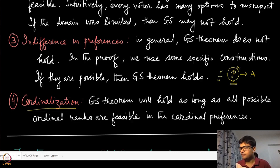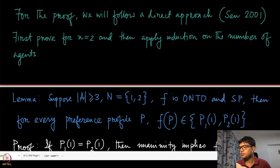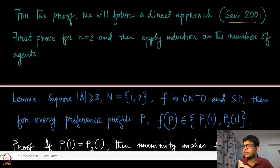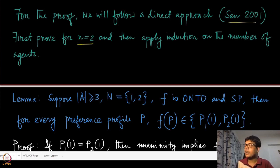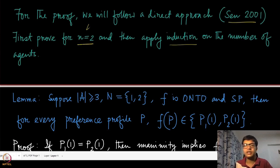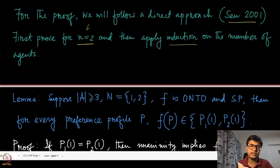So in some sense, cardinalization that admits all those strict preferences for all agents means that an equivalent GS theorem will hold. It does not really matter whether we use cardinalization or ordinalization — it just matters how these alternatives are positioned. With that, let us start the proof. We are going to follow a very direct approach due to Sen 2001, and we will look at the simpler setting of two players, then apply induction.